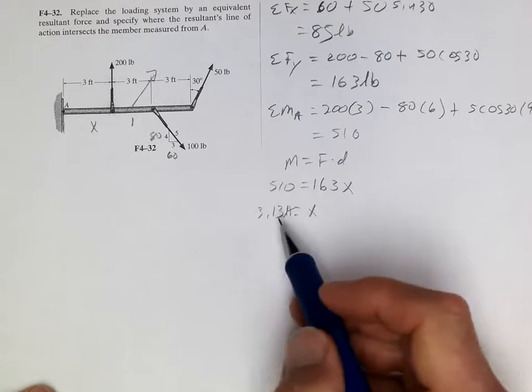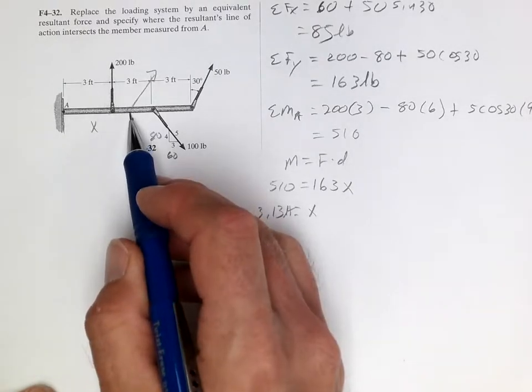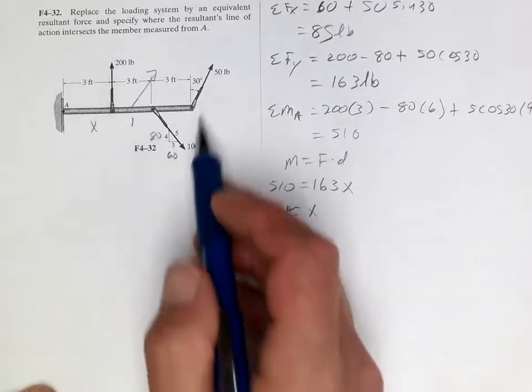So a force of 163 at 3.13 from the edge will cause the same moment at A as these three forces.